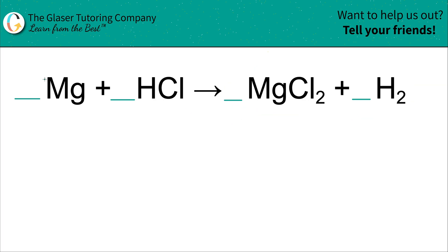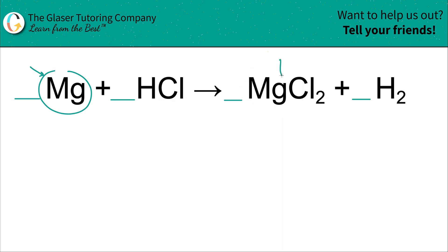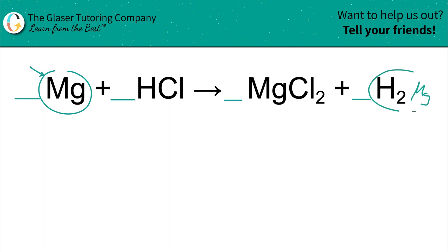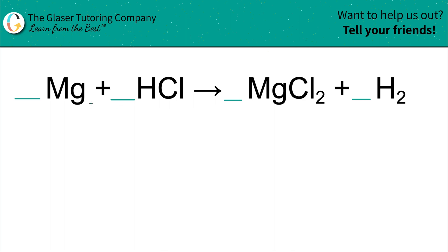I just begin with the first thing I see. I have magnesium here — it only exists in one location on the left-hand side and one location on the right-hand side. It's tied in with the chlorine, but it's still part of only one molecule. I like to work with elements like that. You have one magnesium on the left and one magnesium on the right, so magnesium is balanced.